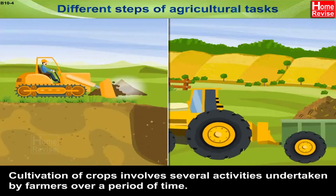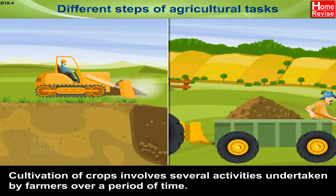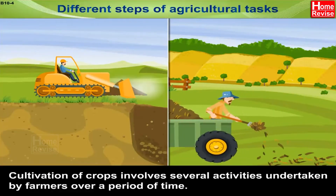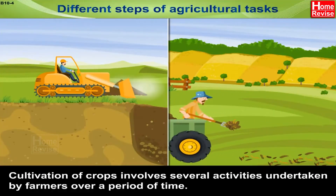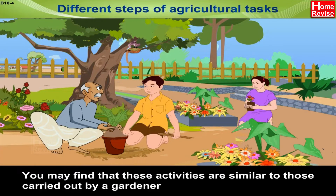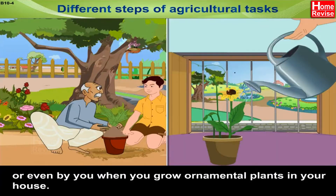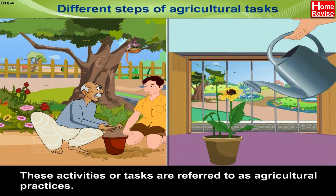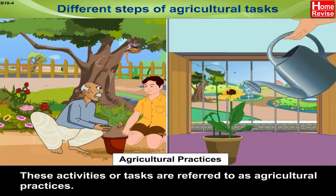Cultivation of crops involves several activities undertaken by farmers over a period of time. These activities are similar to those carried out by a gardener, or even by you when you grow ornamental plants at home. These activities or tasks are referred to as agricultural practices.